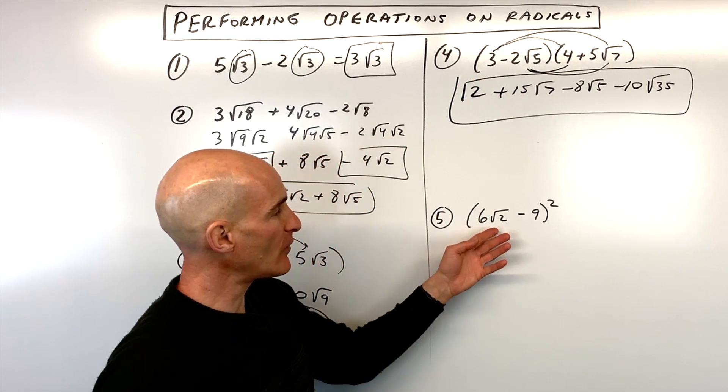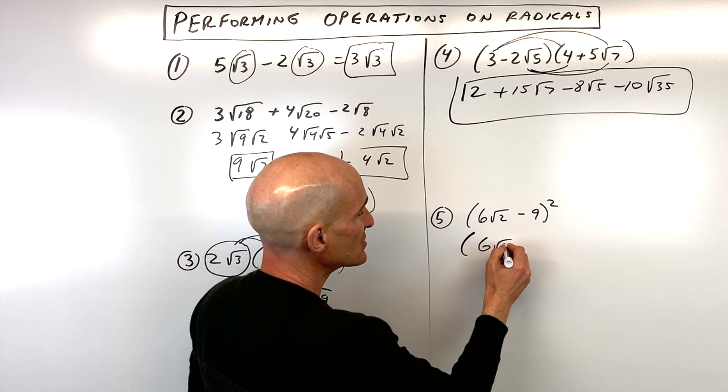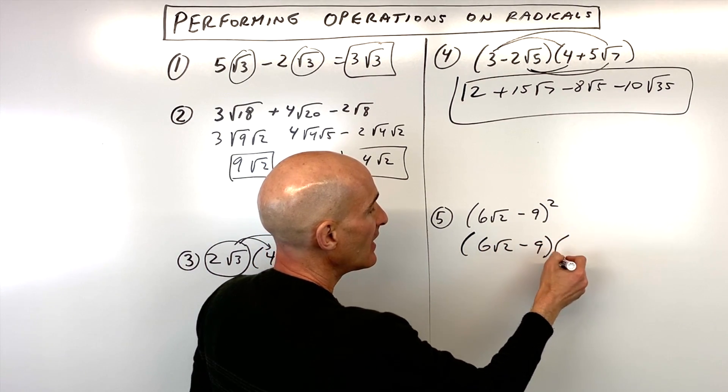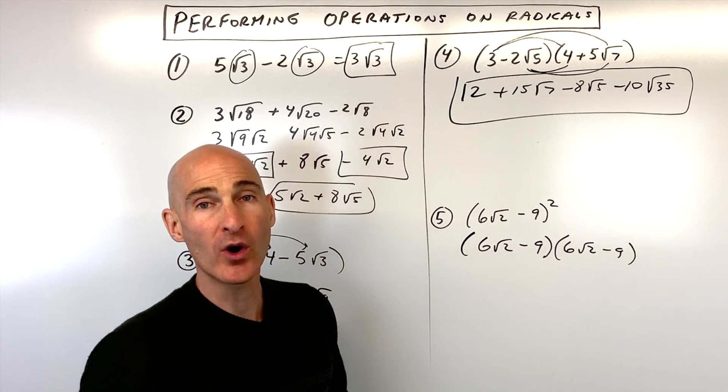And then the last one, number five, we have a binomial squared. And what you do when you have a binomial squared is you can think of this as six square root of two minus nine and another six square root of two minus nine. So squaring you have that quantity twice, right?